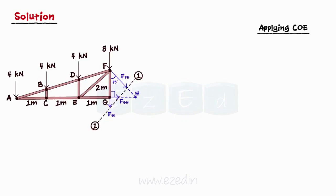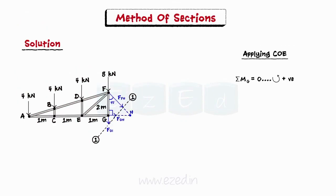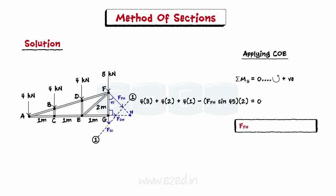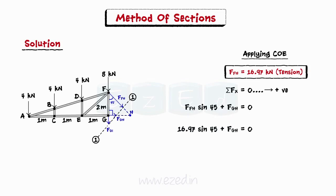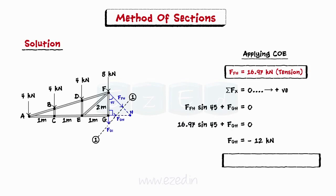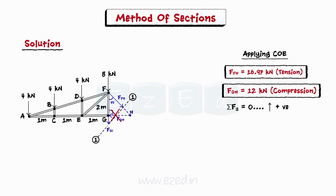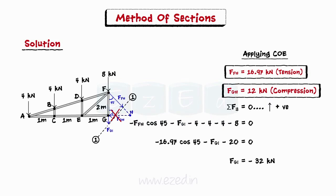Now we will apply conditions of equilibrium to this isolated part. We first equate the summation of moments of all forces about point G to zero. On simplifying, we find the force in member FH to be 16.97 kN, tensile in nature. Then we equate the summation of all forces in the x direction to zero, finding the force in that member to be 12 kN, compressive in nature. Then we equate the summation of all forces in the y direction to zero, and find that the force in member GI is equal to 32 kN, compressive in nature.